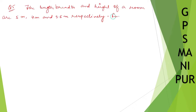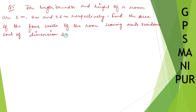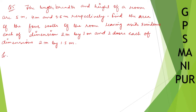We are doing Exercise 12.3, question number five. The length, breadth, and height of a room are 5 meters, 4 meters, and 3.5 meters respectively. Find the area of the four walls of the room, leaving aside three windows each of dimension 2 meters by 1 meter, and two doors each of dimension 2 meters by 1.5 meters.